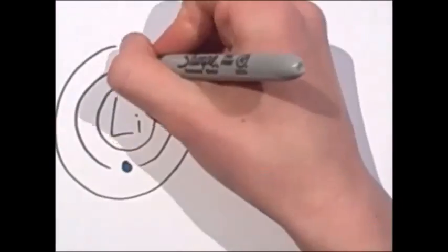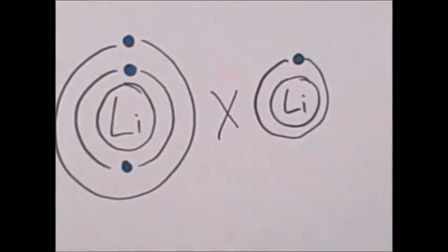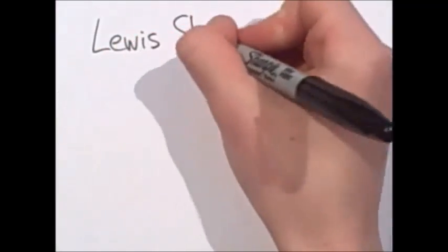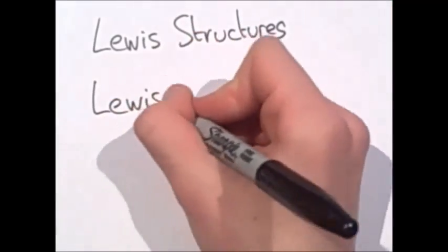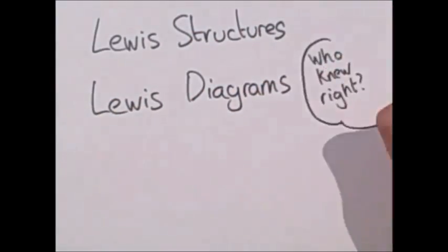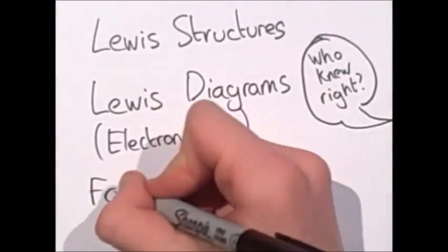Lewis structures show the electrons in the outer shell as it is these which are involved in chemical bonding. The most effective way to get a Lewis structure drawn right is to draw a Lewis diagram, sometimes called an electron dot diagram, for all the atoms involved.